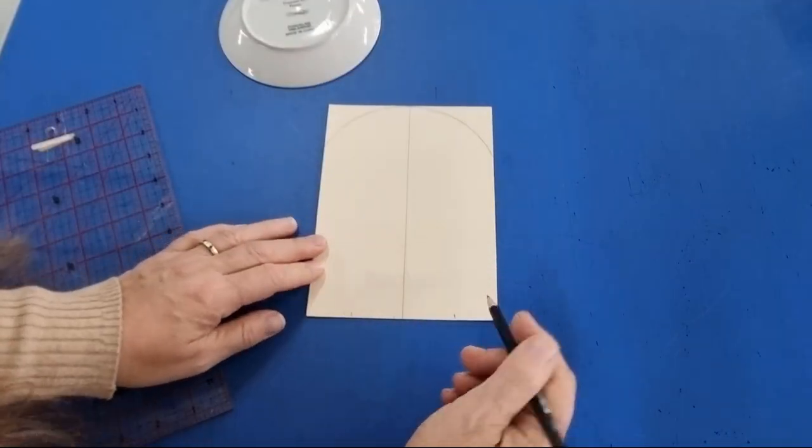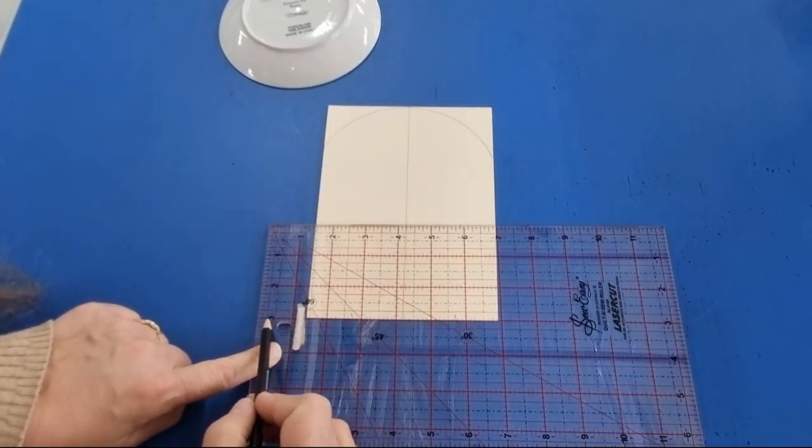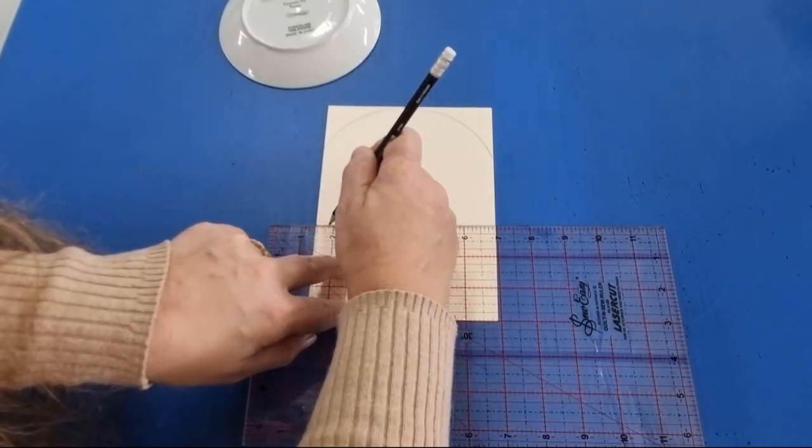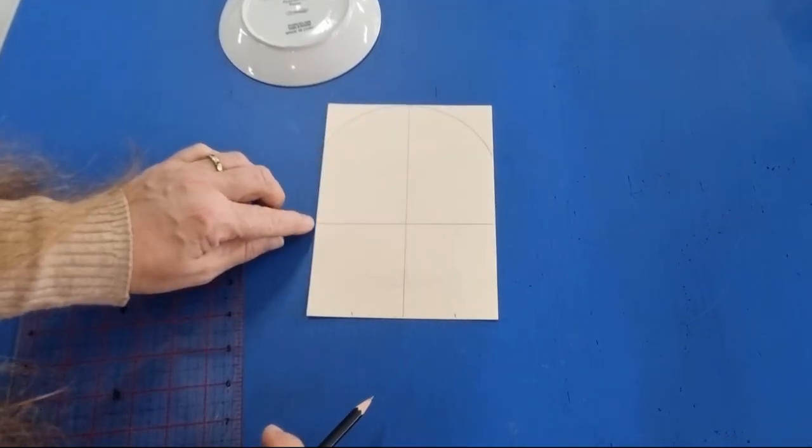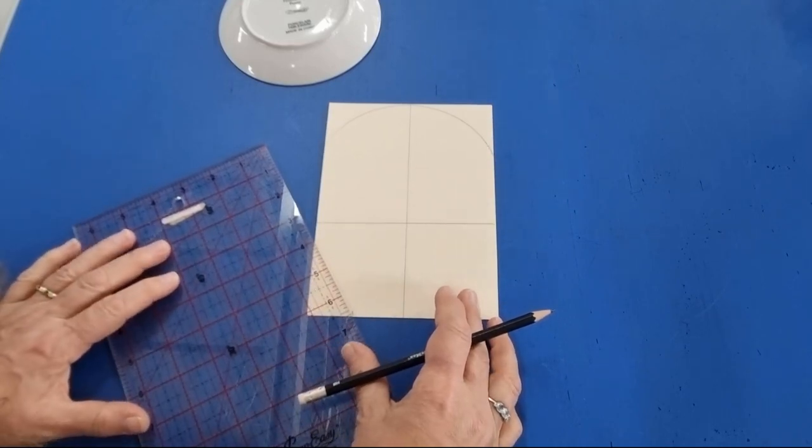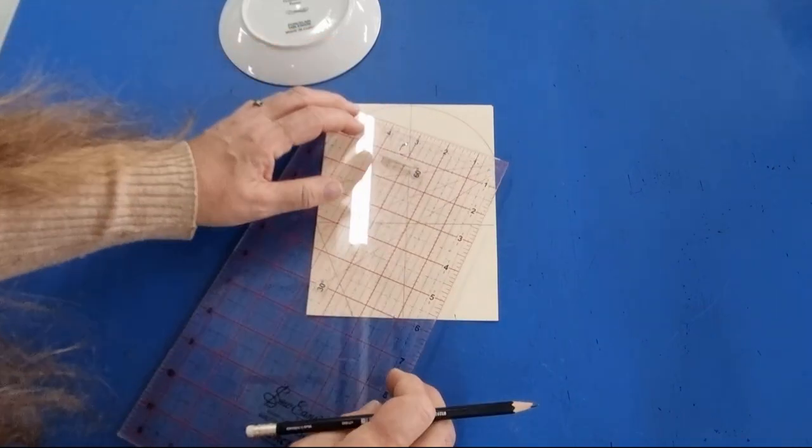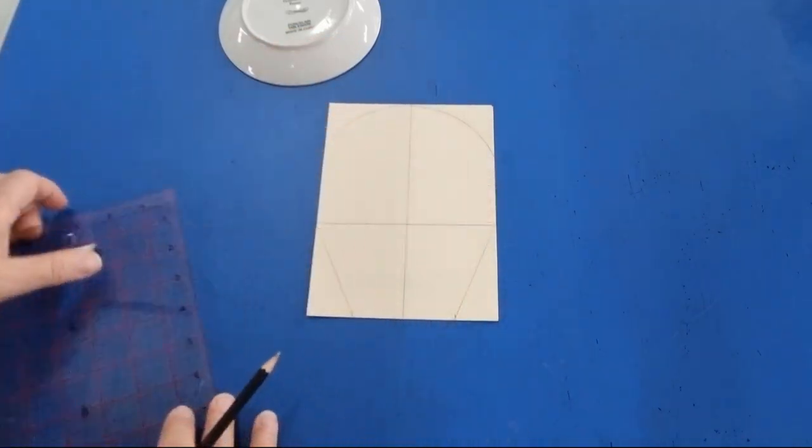From there, we're going to come up from the base another three inches. So I've lined up the three-inch line at the bottom of my card, and I'm just going to make a line across here. Then from this line we're going to meet up with the outside one and a half inch line. Just take your ruler and put it on the angle, and do the same for the other side.